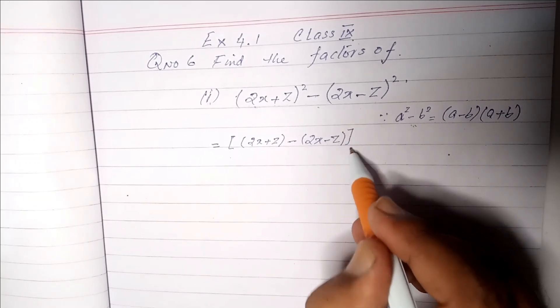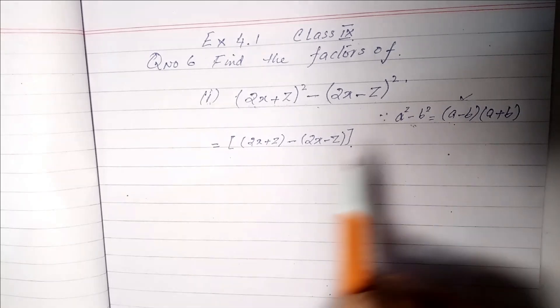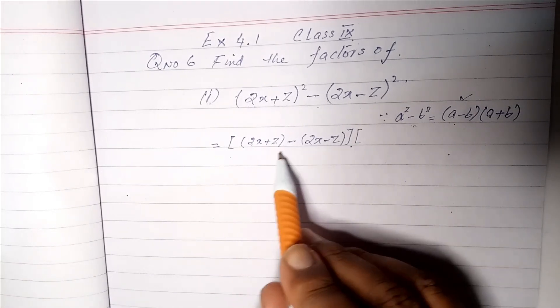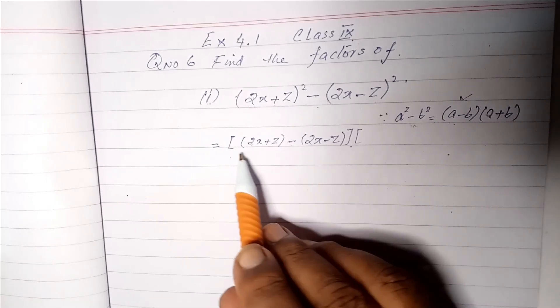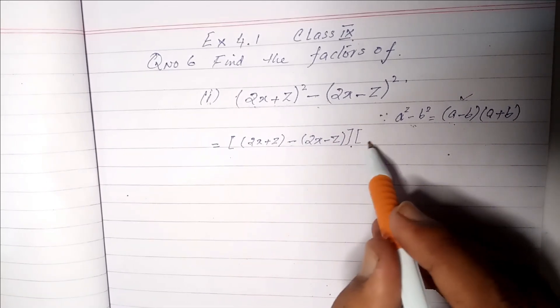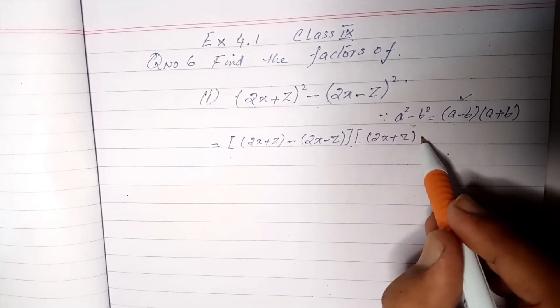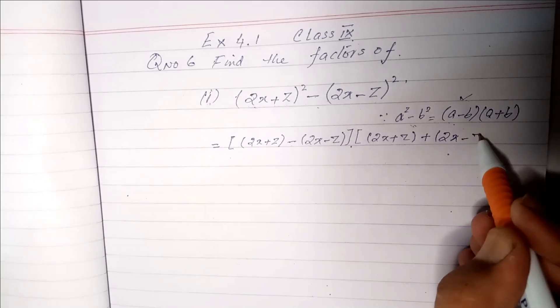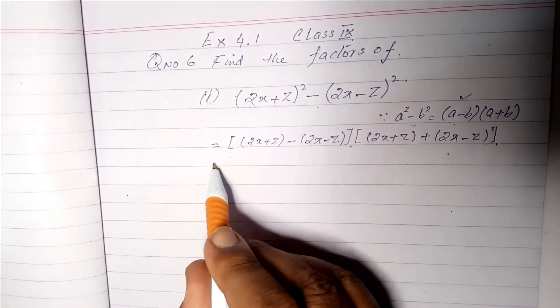Now we have completed this part, I mean (a-b). Then we will make this square bracket and repeat this. Here we will write minus and here plus. We will write this whole value: 2x+z plus (2x-z).